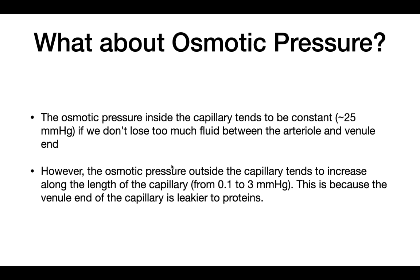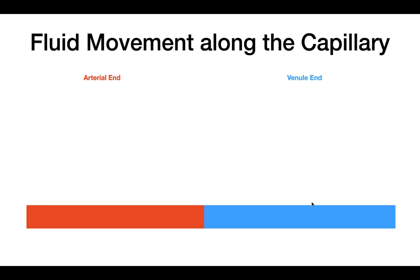The osmotic pressure outside the capillary tends to increase from 0.1 to 3 mmHg. This is because the venule end of the capillary is leakier to proteins, so proteins can escape from the capillary into the ISF, therefore increasing the osmotic pressure outside.